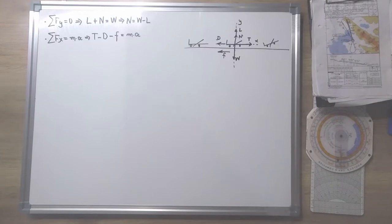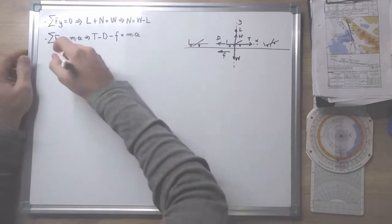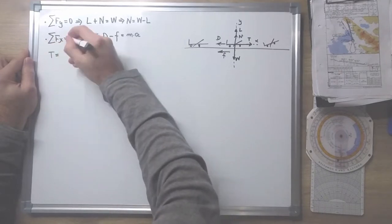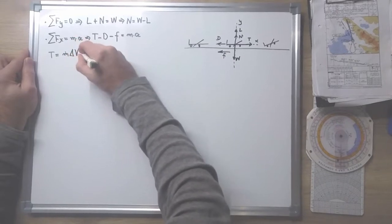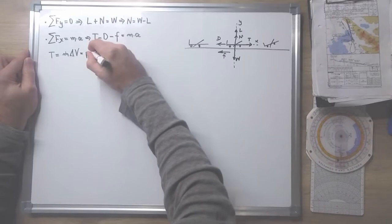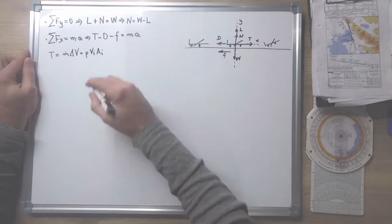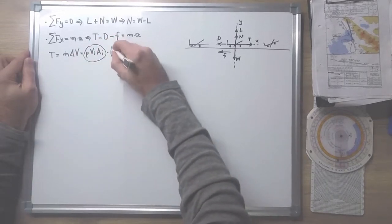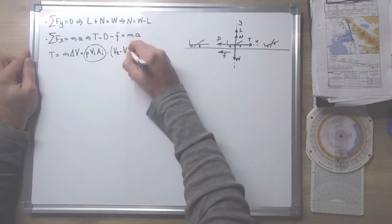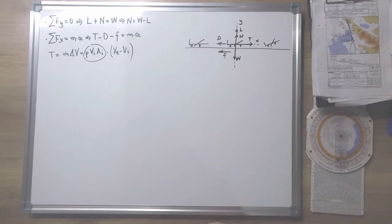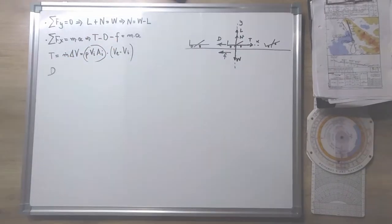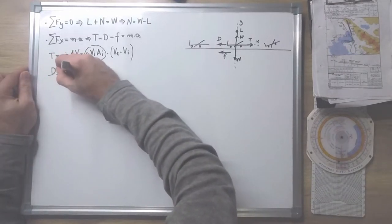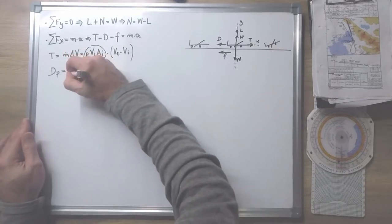As we can see, the equation contains forces that are not constant with time, therefore the acceleration will also not be constant with time. The forces are: thrust, which depends on air density, mass flow, and the velocity of the exhaust gas minus the velocity of the aircraft — so it's not constant. Then we have drag, which since the aircraft doesn't create too much lift during the takeoff roll, is parasite drag due to the motion of the airplane into the air, which equals one half times air density times speed squared times the reference area times the drag coefficient.